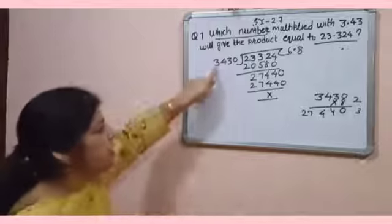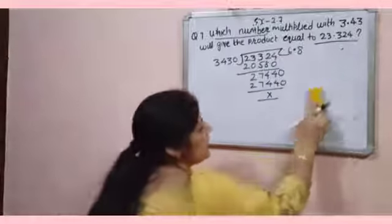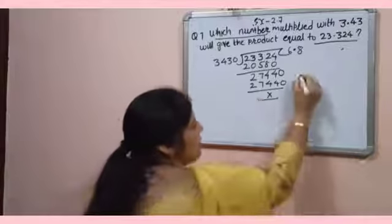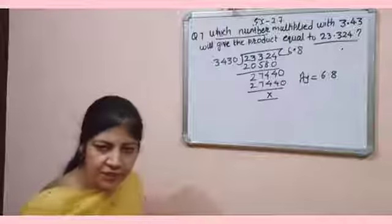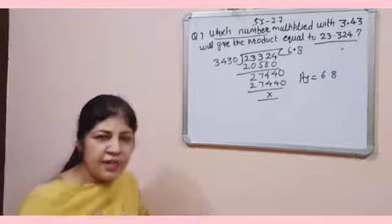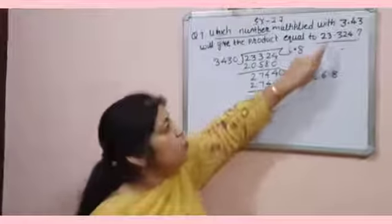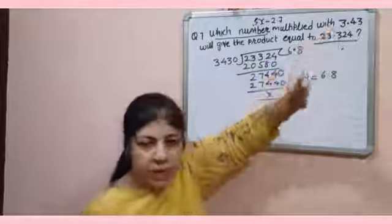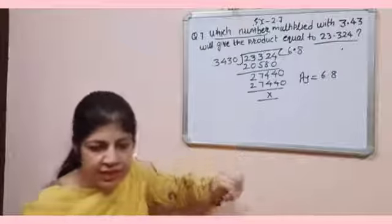It means it is a multiple of 8. So your second decimal number will be 6.8. Or even you can do directly without framing the linear equation. Just divide product by first decimal number.